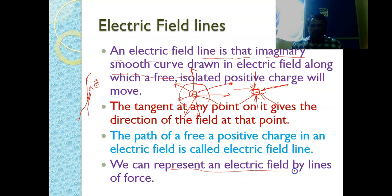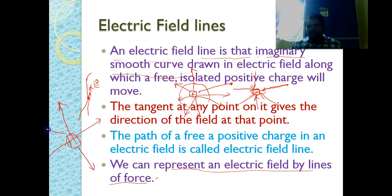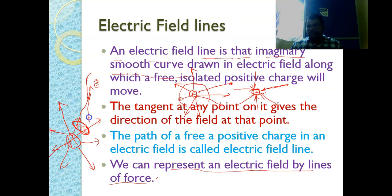We can represent electric field lines by the electric lines of force. For a positive charge, the electric field lines go away from the center of the charge. If we consider a unit surface area with area vector A⃗ and the electric field intensity at that point is E⃗, then the electric flux is given by Φ = E⃗ · A⃗.